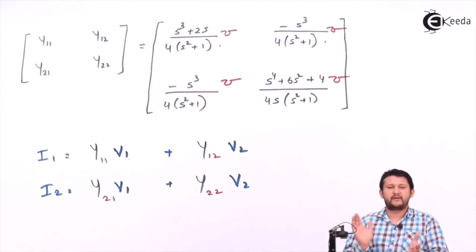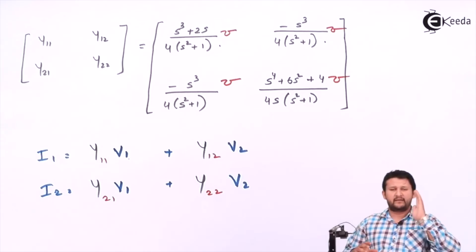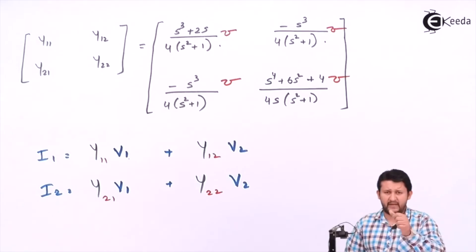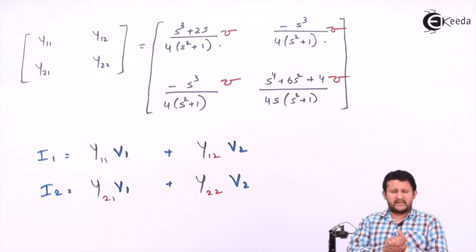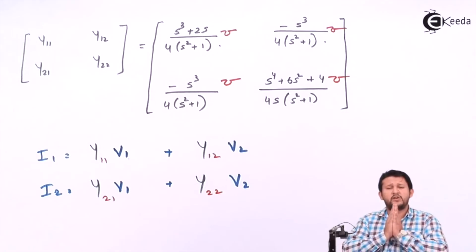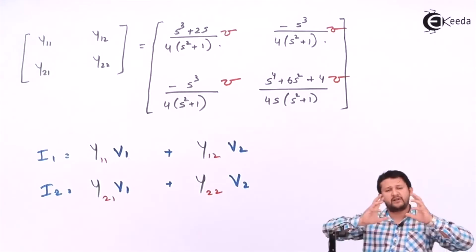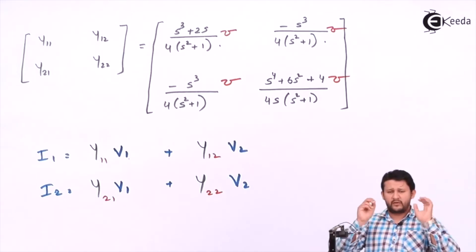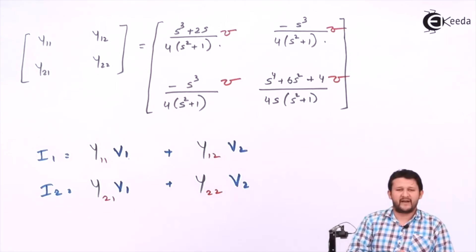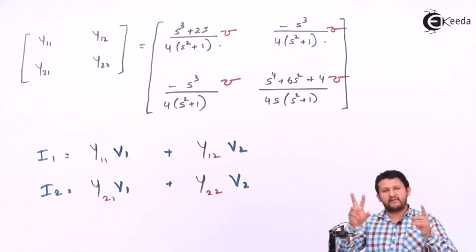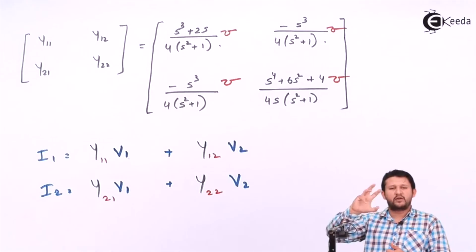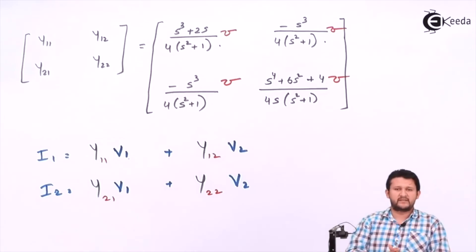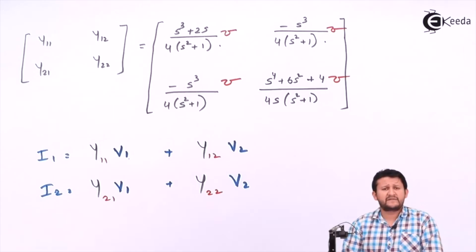Keep practicing. Remember: for Z parameters and ABCD parameters, start with KVL — things are much easier with KVL. For ABCD parameters, you also solve Z parameters first and then convert to ABCD. But for Y parameters, you apply KCL at each node, use Ohm's law I equals V over R, and get I1 and I2 in terms of V1 and V2. Comparing with the standard equation gives Y11, Y12, Y21, Y22. All four Y parameters have units of Siemens (inverse of ohms).